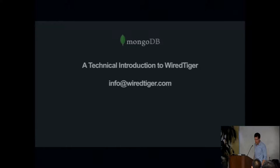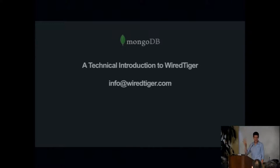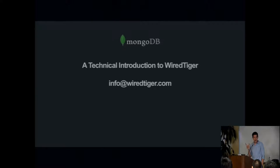Our speaker today is Keith Bostic. When Keith sent me an email with his information and his talk, I tried to convince him to modify his bio, because he had two paragraphs about his long history. I just wanted him to replace all that and just put the word 'legendary.' He refused. Keith is legendary because when he was at Berkeley on the Berkeley Software Systems Group, he helped write BSD, which is the main open source operating system that was around at the time.